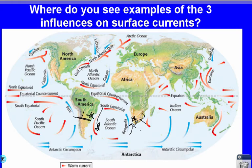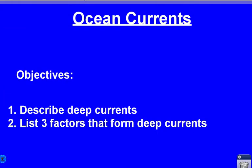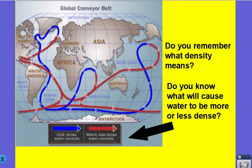Now that you have a good understanding of surface currents — what they are, how they move, what affects them, and how they affect coastal climates — we're going to talk about deep water currents. Deep water currents travel well beneath the surface and usually move much slower than surface currents, mainly because there's nothing really pushing them except the water right behind them. Density is what really drives deep water currents.